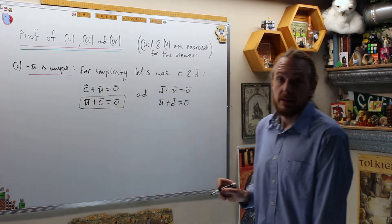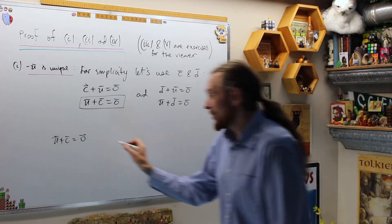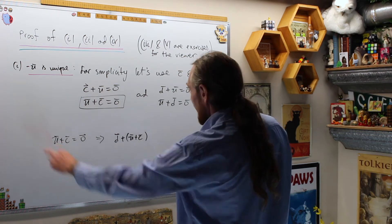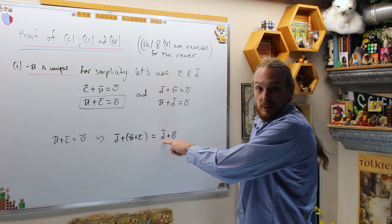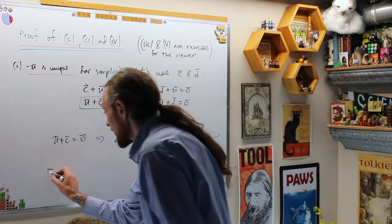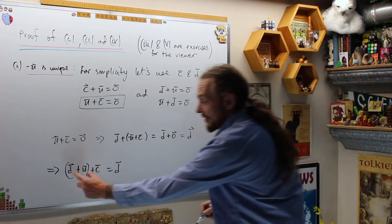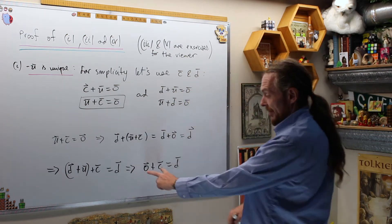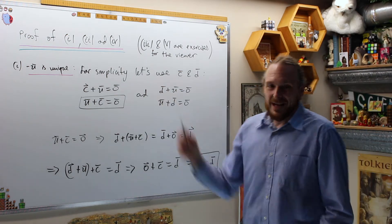Starting from this, I have U plus C is equal to zero. From here I can add D to both sides. That gives us D plus U plus C equals D plus zero. Zero plus any vector leaves it alone, so that will just be D. On the other side, I'm going to associate the brackets — that's axiom three — giving me D plus U plus C is equal to D. Now D plus U is the zero vector, and zero plus C leaves C alone. So our conclusion is those two things are the same. Therefore, if you have an additive inverse, there's only one of them.